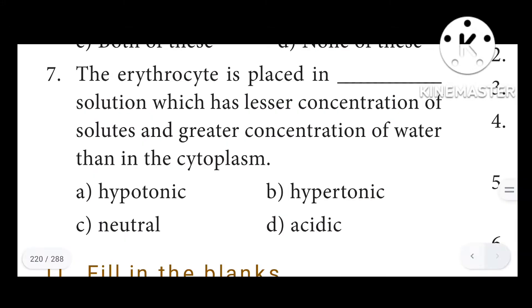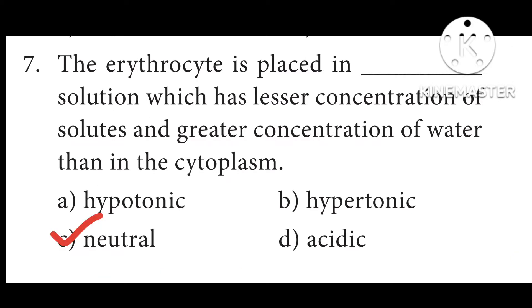Seventh question: The erythrocyte is placed in a blank solution which has lesser concentration of solutes and greater concentration of water than in the cytoplasm. Answer C: Neutral.